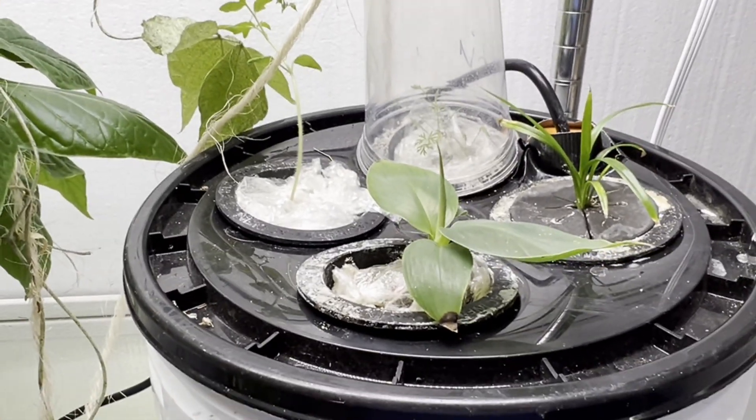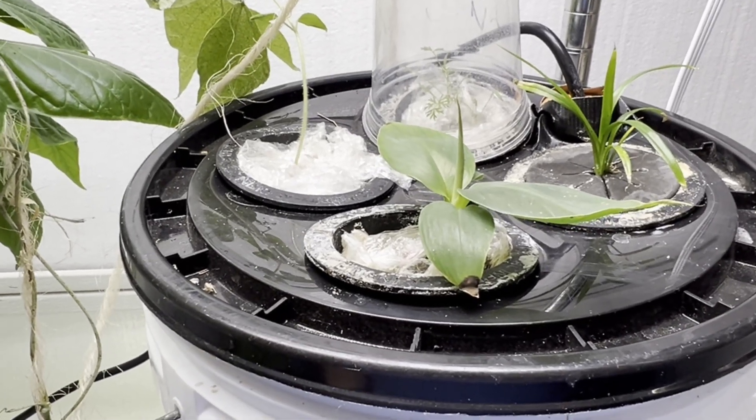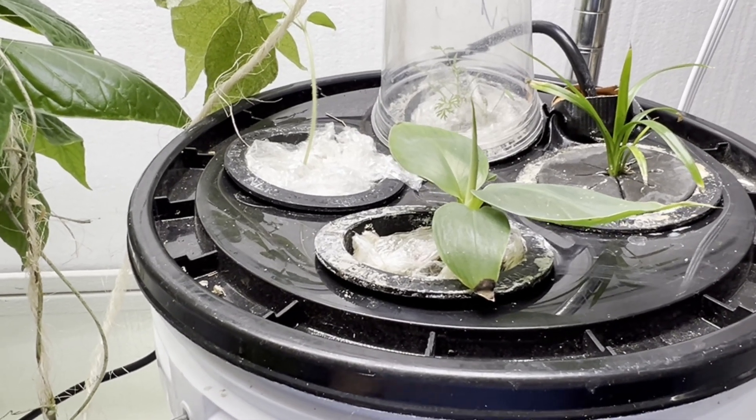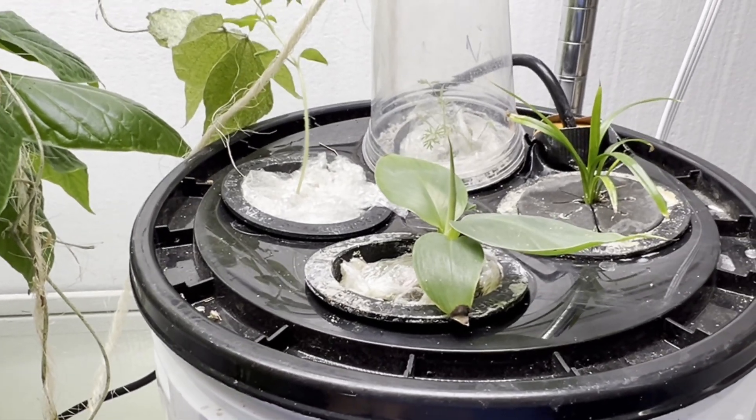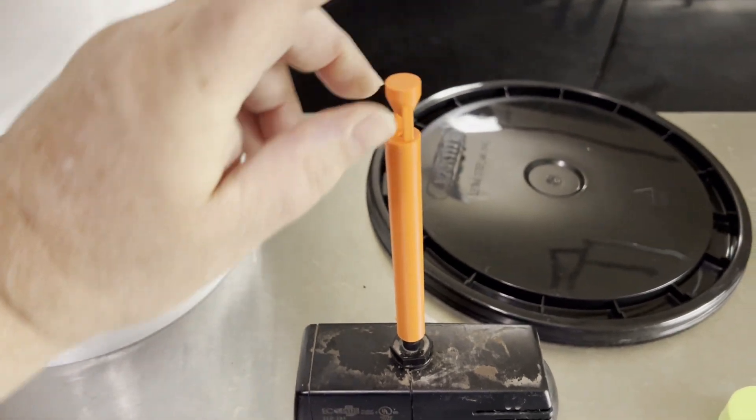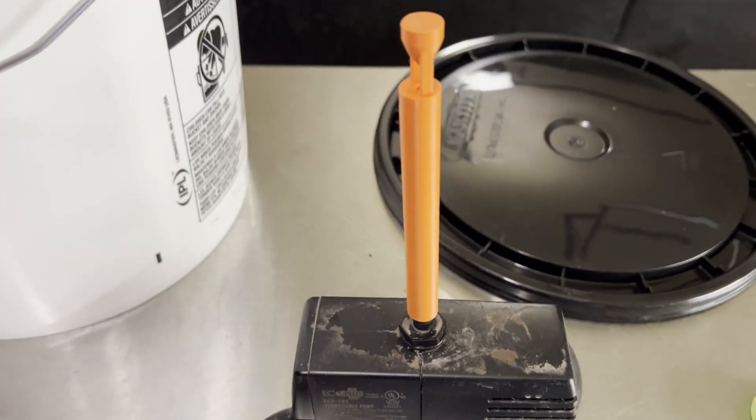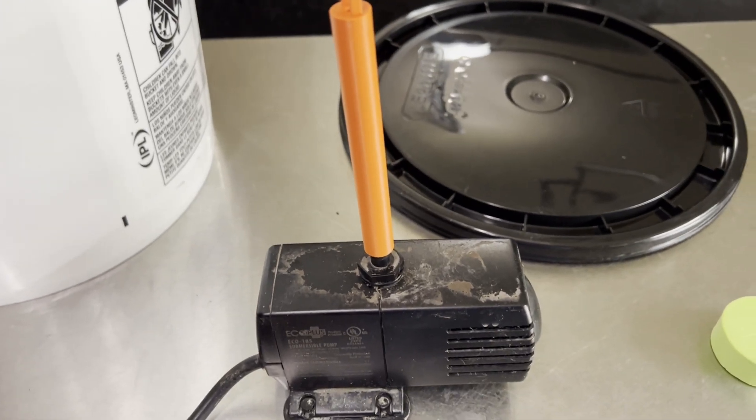And so that's how, once the roots start to pull down through that rock wool, then the plants really start to take off. So putting this together is really simple. Once you have the 3D printed sprayer on the top here, all you do is just put it down and it will stay on there.